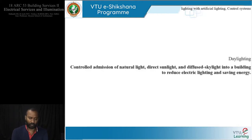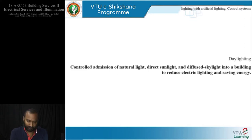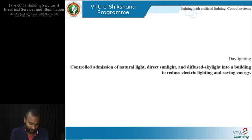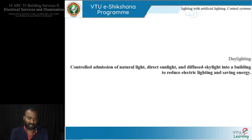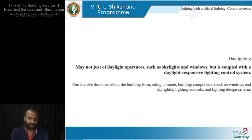With these examples, we now know what daylighting is by definition: daylighting is the controlled admission of natural light — which is direct sunlight and also diffused skylight — into a building, to reduce electrical lighting and save energy. It is a controlled admission, and that is where you as a designer play a role. Reducing electrical energy is a byproduct, but if we intelligently use this, it can be used to create interesting patterns. The strategies can be interesting and may not just involve daylight apertures with openings in your fenestrations, but it is also coupled with daylight responsive lighting control systems.